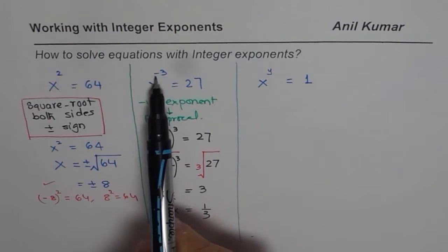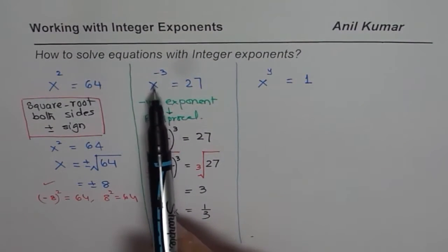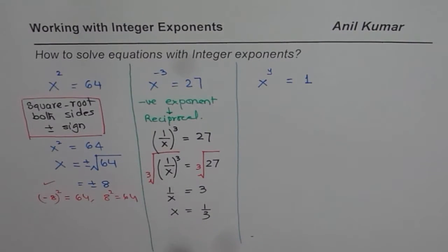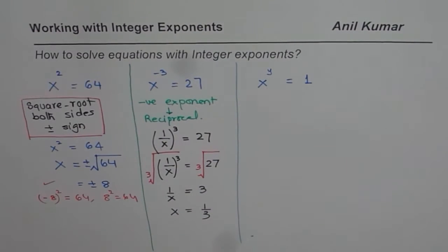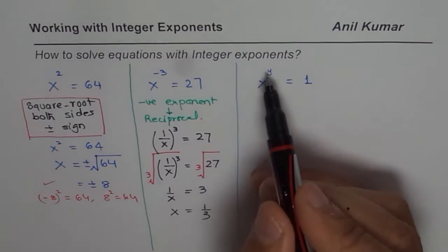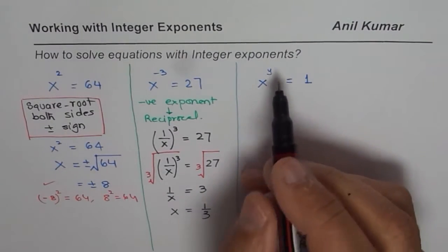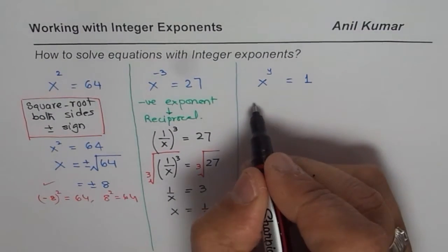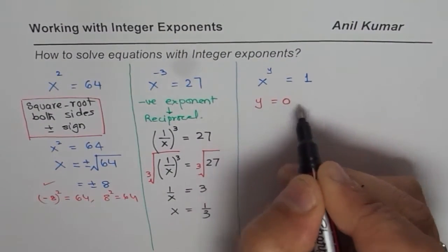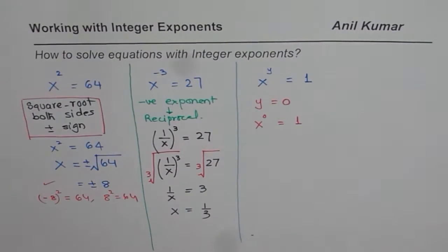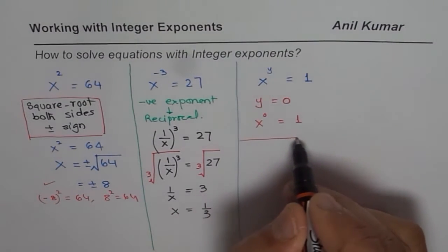Remember: a negative exponent leads to writing it as a reciprocal, then follow the standard method. Now here is a very interesting case — we have x to the power of y equals 1. What should y be? Clearly y should equal 0, since anything to the power of 0 equals 1. That is important to understand.